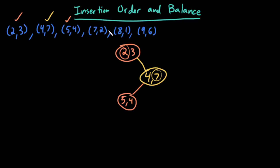Next, (7,2). I compare x coordinate. 7 is greater than 2, I go right. 2 is less than 7, I go left. 7 is greater than 5, I go right, and insert.